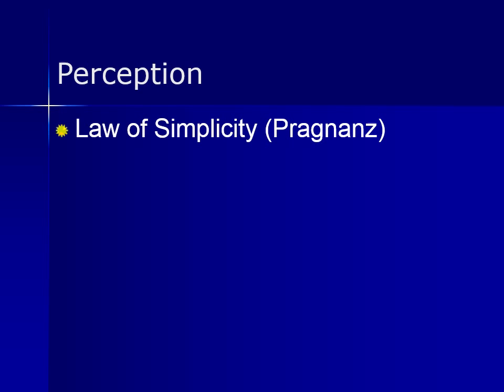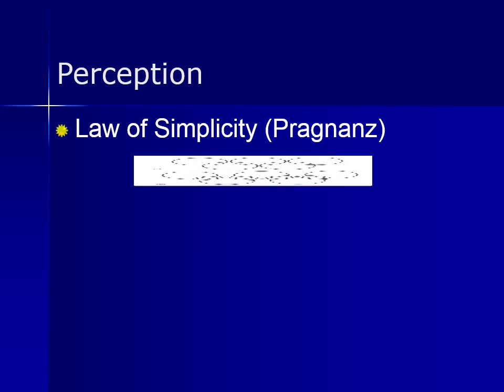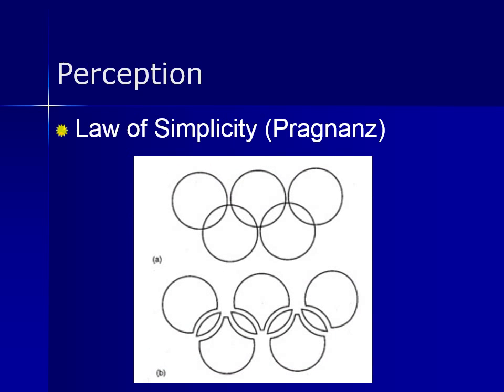With the law of simplicity, we tend to see images in their simplest form possible. In the top image, you may see it as five overlapping circles — which you may recognize as a symbol for the Olympics — rather than as a much more complicated shape as shown in the image on the bottom.